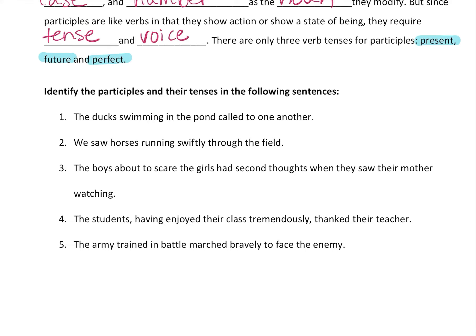'The ducks swimming in the pond called to one another.' A lot of times you're going to look for an '-ing' verb — that will help you a lot. Which ducks? The swimming ducks — they're swimming in the pond. That participle is present tense. 'We saw horses running swiftly through the field.' Which horses? The running horses — 'running' modifies 'horses' just like 'swimming' modifies 'ducks.' The horses are running right now, so that is also present tense.